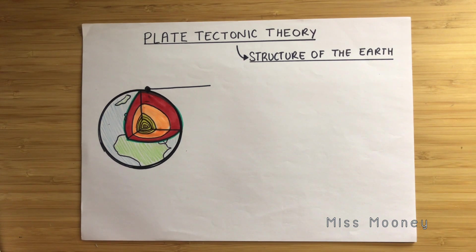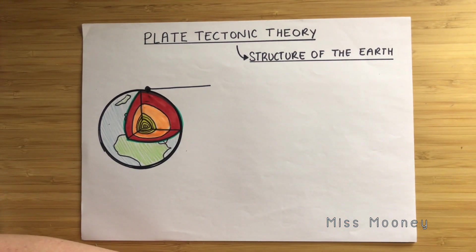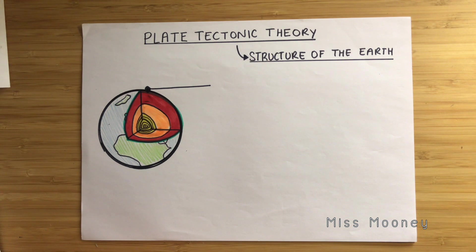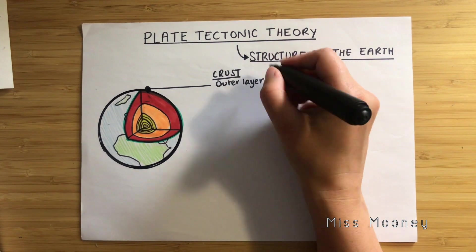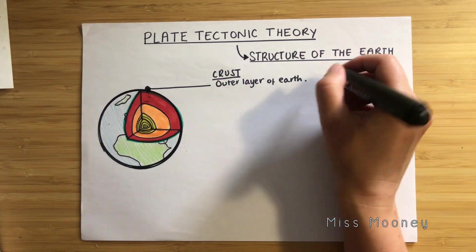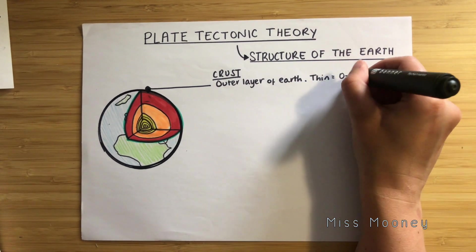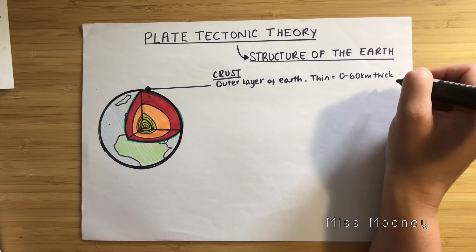Firstly, we have the earth's crust. This is the outer layer of the earth that we stand and build on, and it's also the land that we find underneath the oceans. It's generally quite thin — zero to 60 kilometers thick.